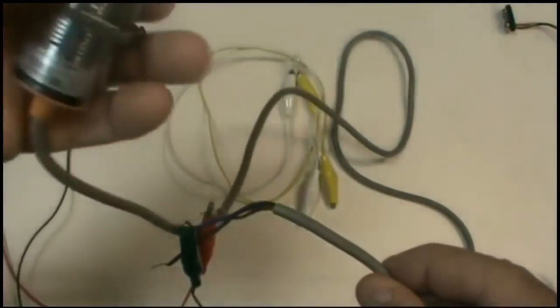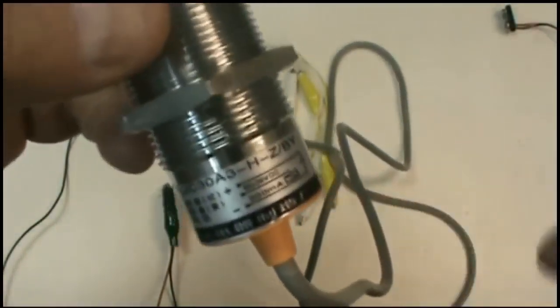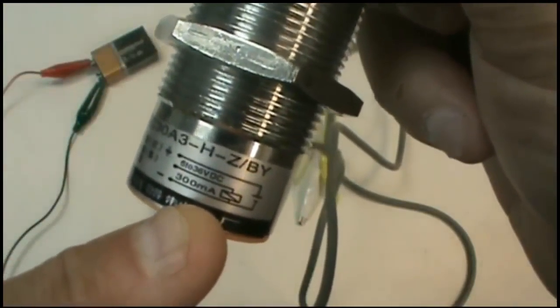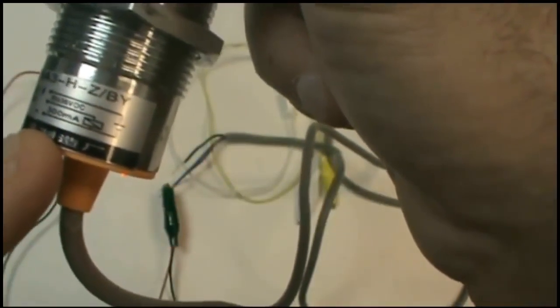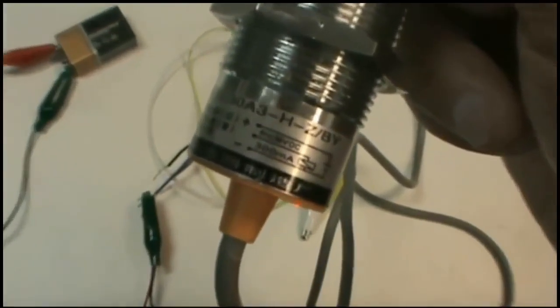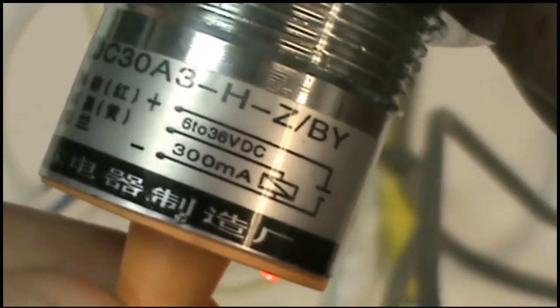Before I do that, let me go back to this diagram here on the sensor. This particular sensor has some information here that's useful. The current carrying capability for the sensor is 300 milliamps, and it tells you that the voltage capability for the sensor is 6 volts to 36 volts at 300 milliamps. Turns out my lamp is going to draw about half that, so we're safe.